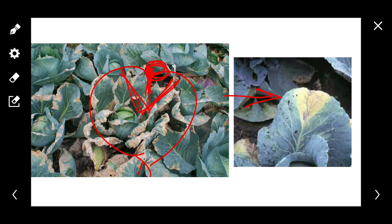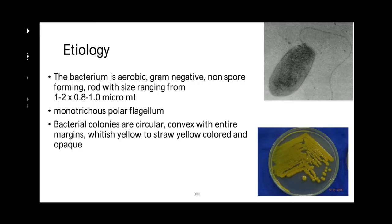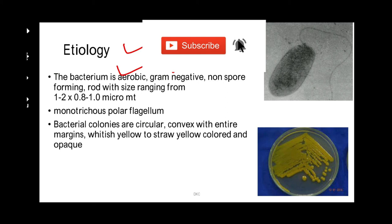Coming to the etiology: this disease is caused by Xanthomonas campestris, which is an aerobic, gram-negative, non-spore-forming, rod-shaped bacterium. It has a single flagellum present on one side, called monotrichous polar flagella. Bacterial colonies are circular and convex.